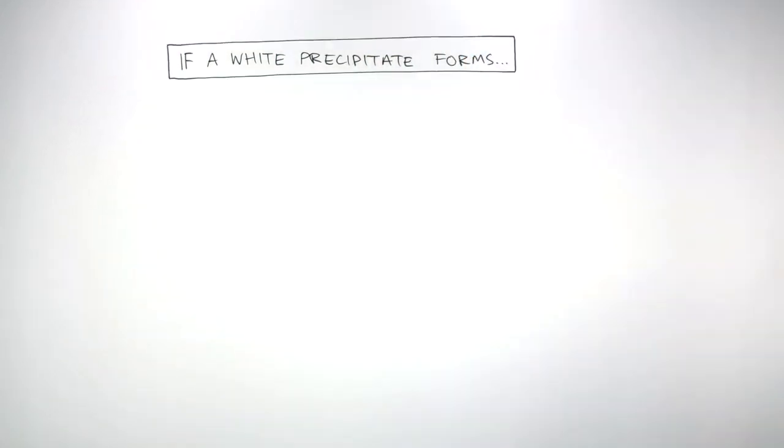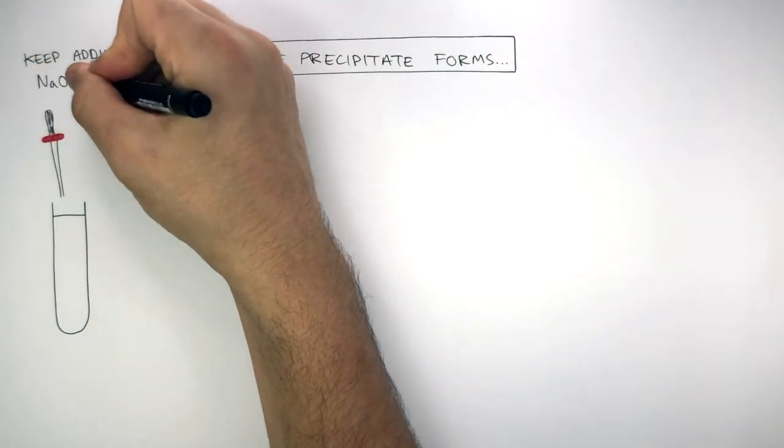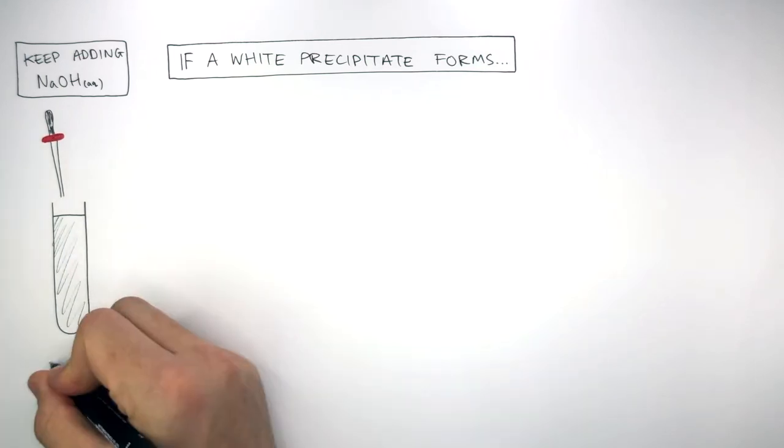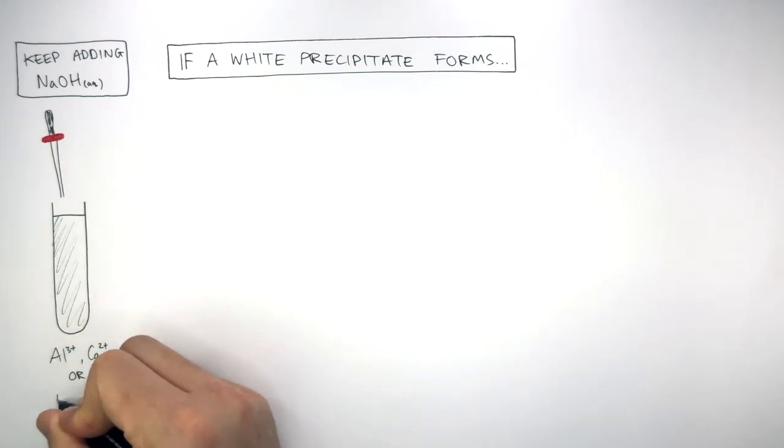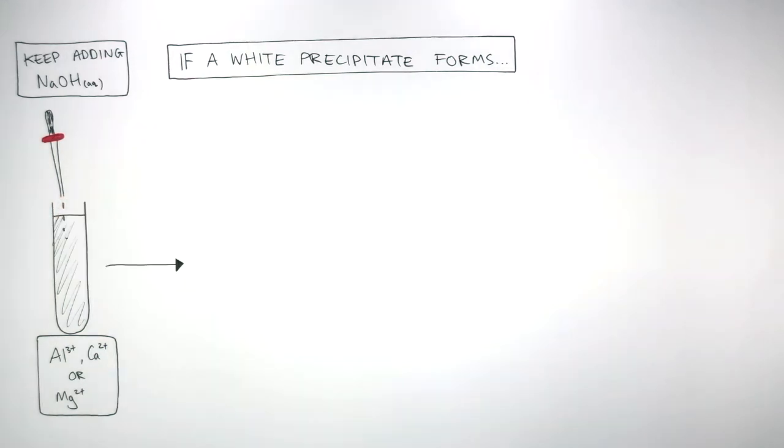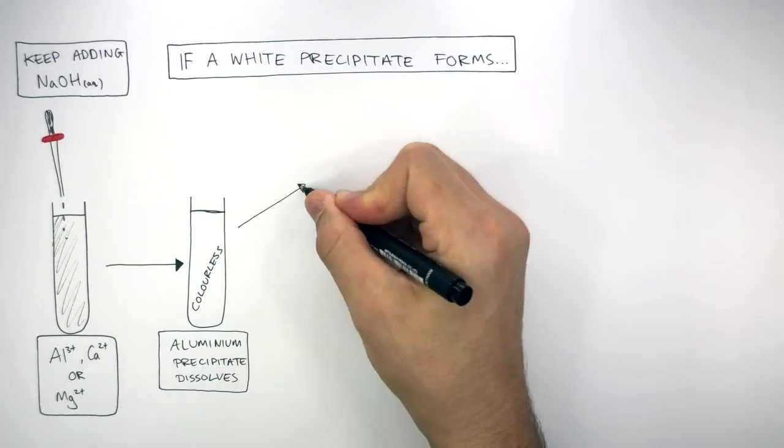If a white precipitate forms, then we keep on adding sodium hydroxide solution to the white precipitate which could be aluminium, calcium, or magnesium. After adding sodium hydroxide solution, if the solution becomes colourless, this is because the aluminium precipitate has dissolved. So if the solution becomes colourless, we know the ion was an aluminium ion.